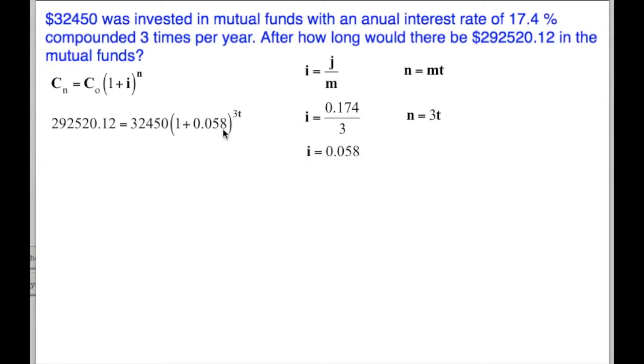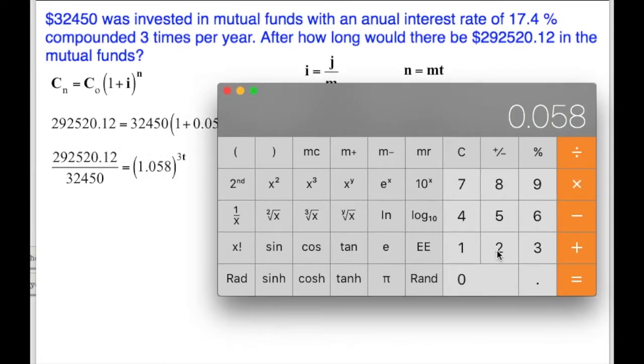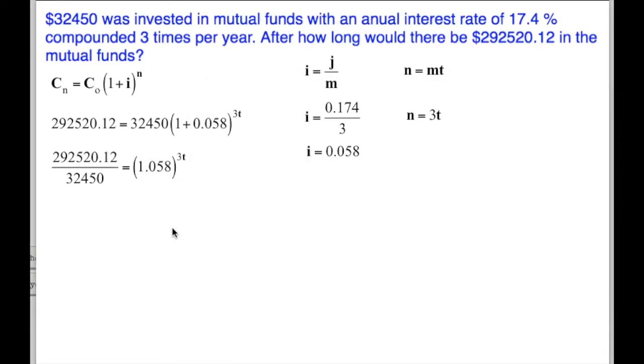We want to get the 3t alone. So I want to get rid of this $32,450, which is multiplying by bracket. I divide both sides by $32,450. When I divide the right-hand side, it cancels. When we divide the left-hand side, we get this division. That simplifies to 292520.12 divided by 32450 equals 9.01448. It goes on for a while. Do not round that number. Keep it in your calculator.